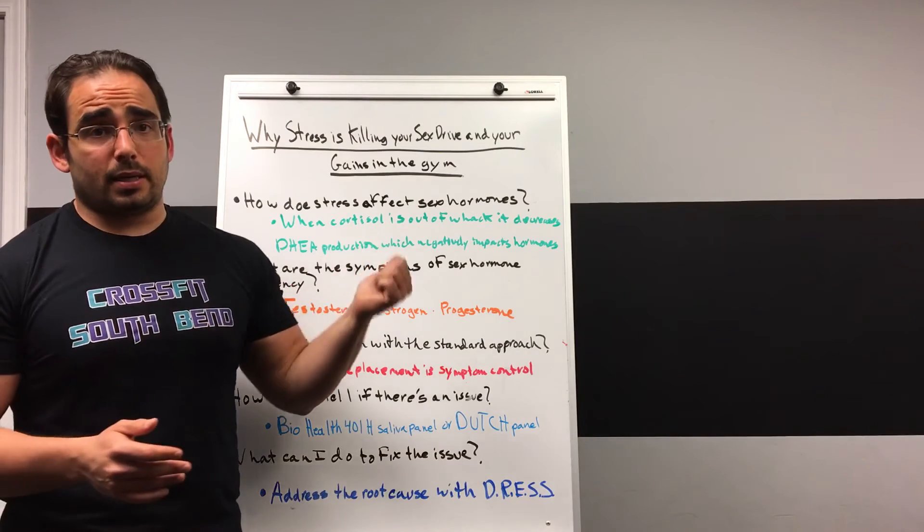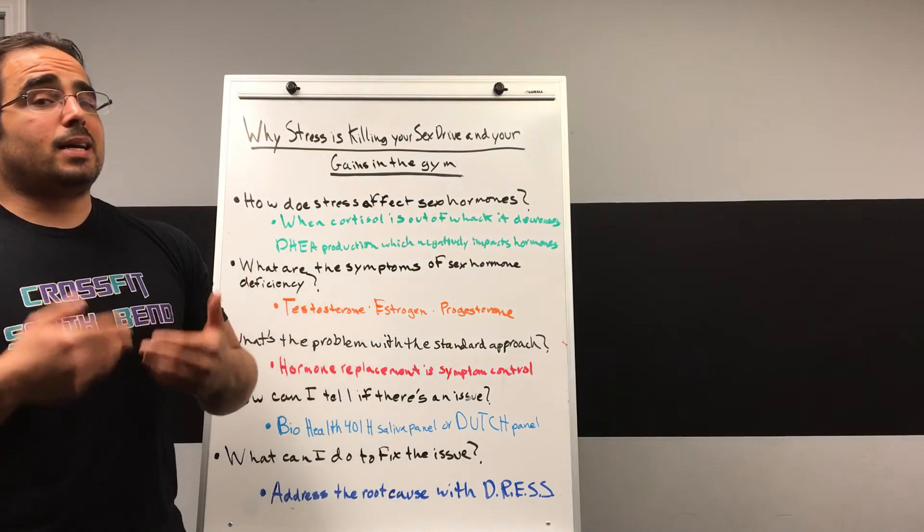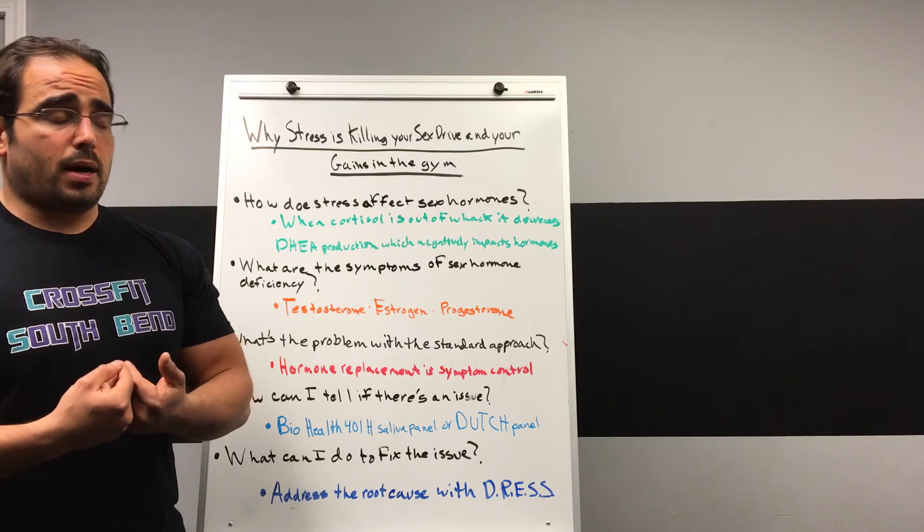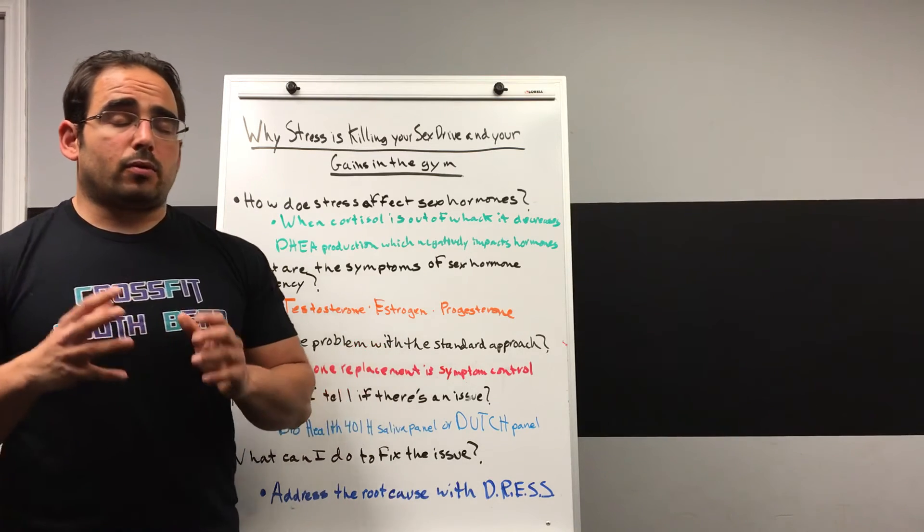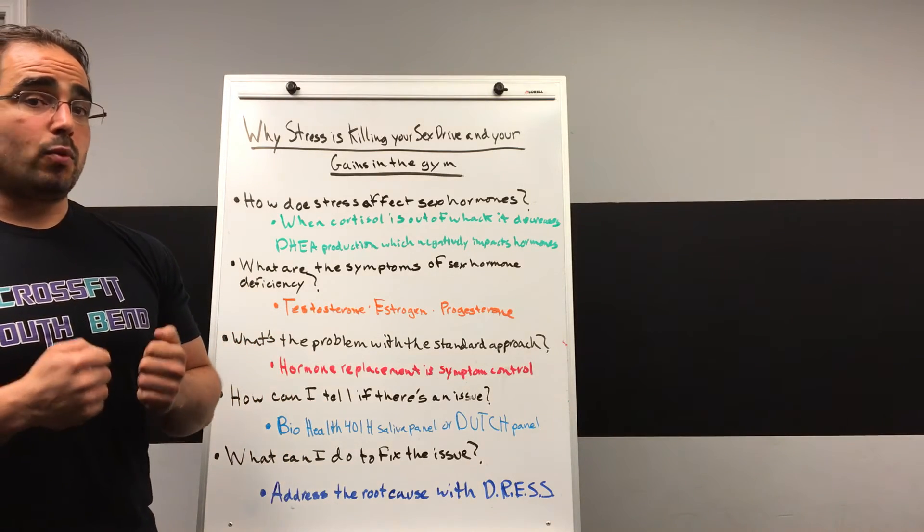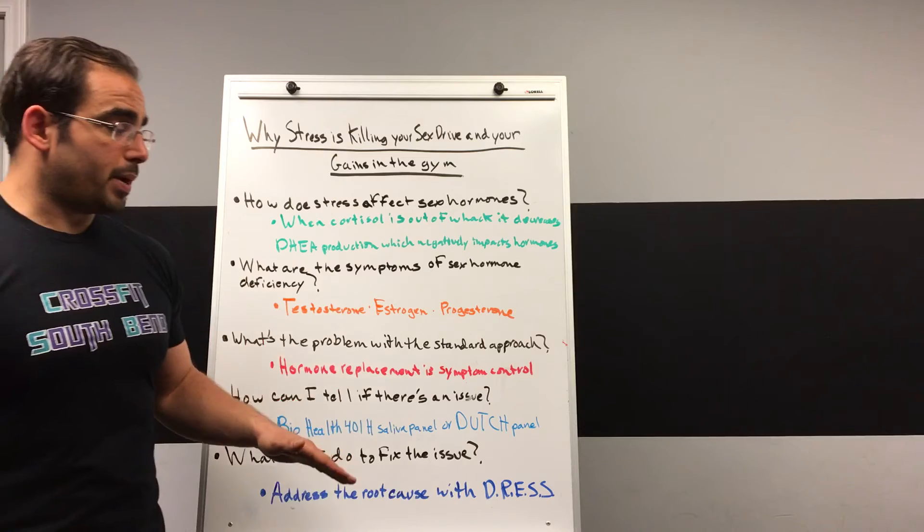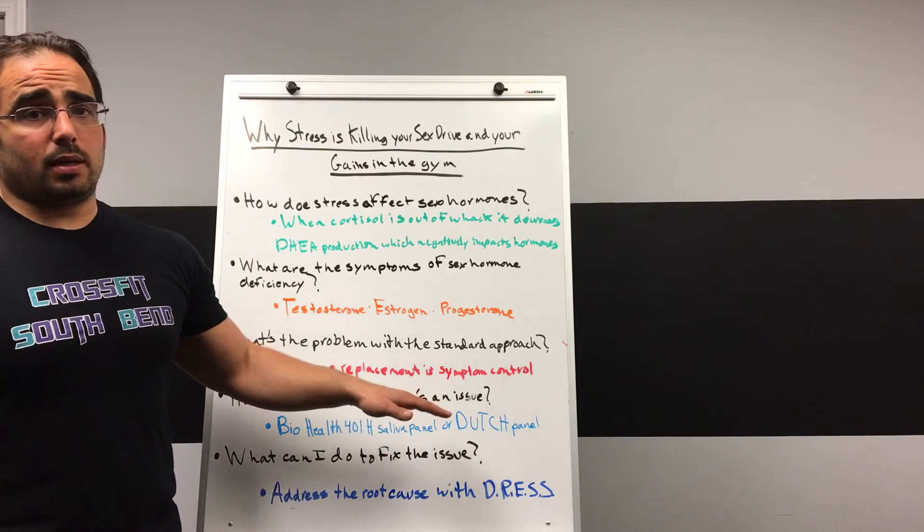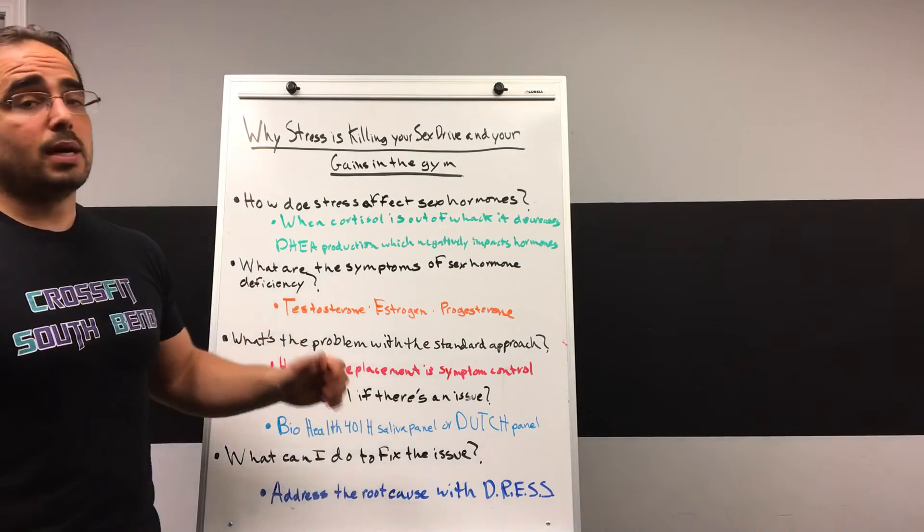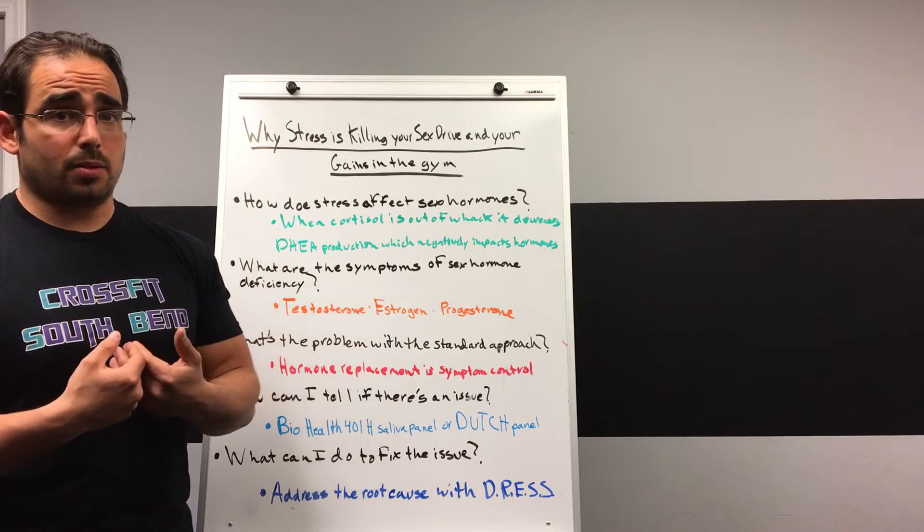How can I tell if there's an issue? Obviously if you're experiencing symptoms, that can give you a general idea that something is going wrong, but it's not enough by itself to tell you what's actually going wrong. Typically a symptom or a set of symptoms only just points in the direction. It doesn't actually tell you what's actually going on. In order to really find out what's going on, doing something like a BioHealth 401H Saliva Panel or a Dutch Panel, which is a urine panel, gives you a much better sense of what your hormones are actually looking like. In both of these, you can do either sex hormones or adrenal hormones, or ideally both, because they have a very close interrelationship with one another.